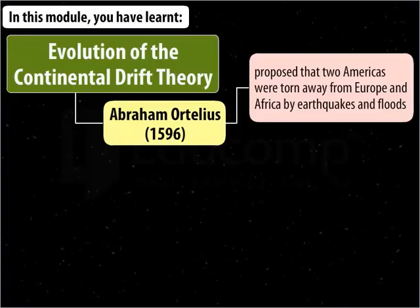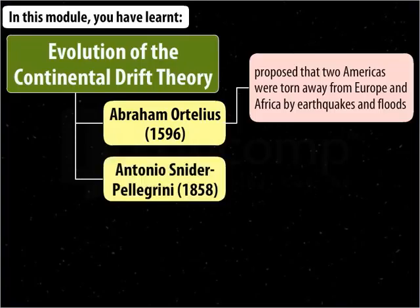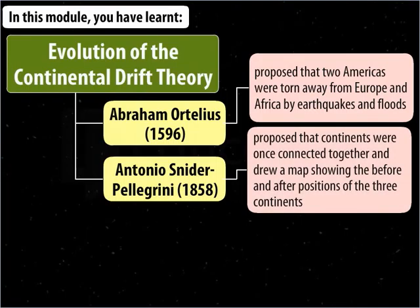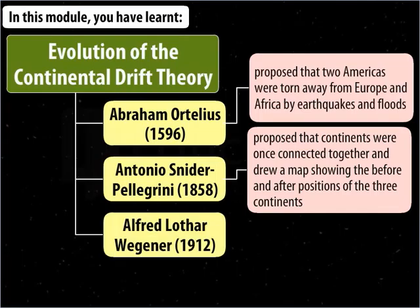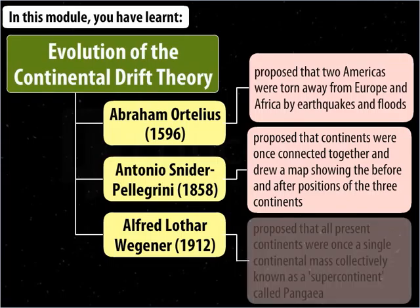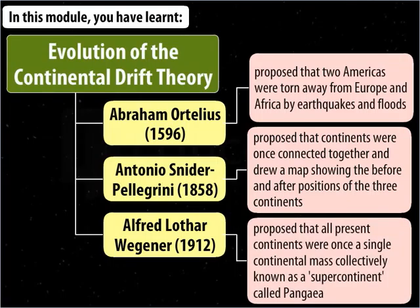In this module, you have learned the evolution of the Continental Drift Theory. In 1596, Abraham Ortelius proposed that the two Americas were torn away from Europe and Africa by earthquakes and floods. In 1858, Antonio Snyder-Pellegrini proposed that continents were once connected together and drew a map showing the before and after positions of the three continents. In 1912, Alfred Lothar Wegener proposed that all present continents were once a single continental mass, collectively known as the supercontinent Pangaea.